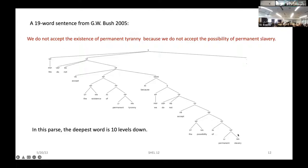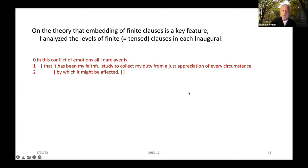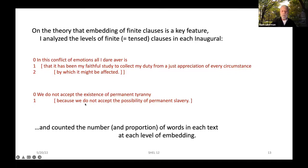Now, one might argue there are a lot of different ways to embed — a lot of different kinds of structures that can lead to a longer path to the root of the clause. So one might think that embedding of finite clauses — that is, tensed clauses — is a key feature. So I analyzed the levels of finite clauses in each inaugural. For instance: 'In this conflict of emotions, all I dare aver is that it has been my faithful study to collect my duty from a just appreciation of every circumstance by which it might be affected' — that's three levels of tensed clauses, whereas in George Bush's case, there's only two. I counted the number and proportion of words in each text at each level of embedding.